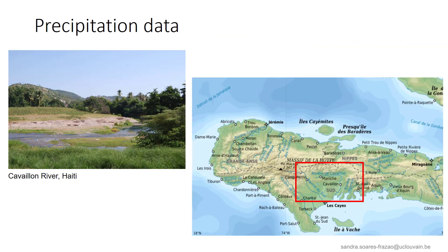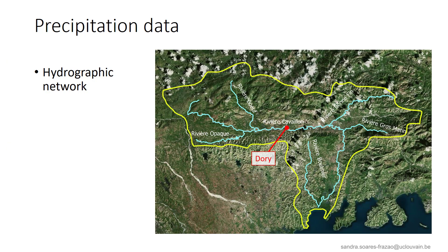We will now illustrate this through an example using data collected in Haiti with tipping bucket rain gauges. This example concerns the basin of the Cavaillon River, located in southern Haiti. The river flows here as you can see. The hydrographic network in the Cavaillon River basin is illustrated here. The main river is of course the Cavaillon River, passing through the city of Cavaillon, and the rain gauge is located here at Dori.